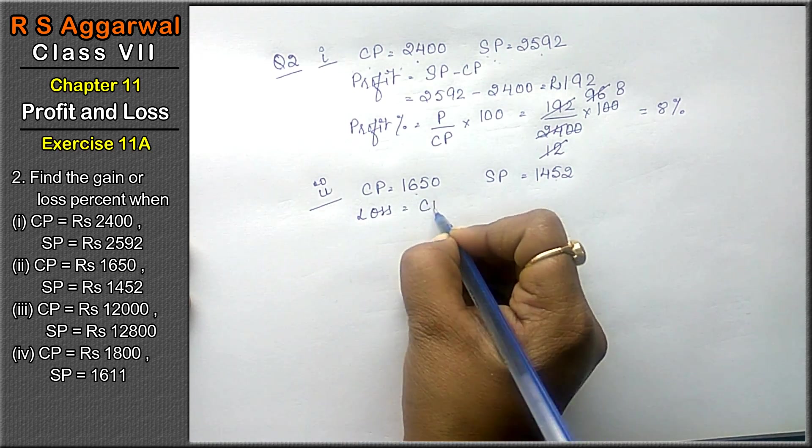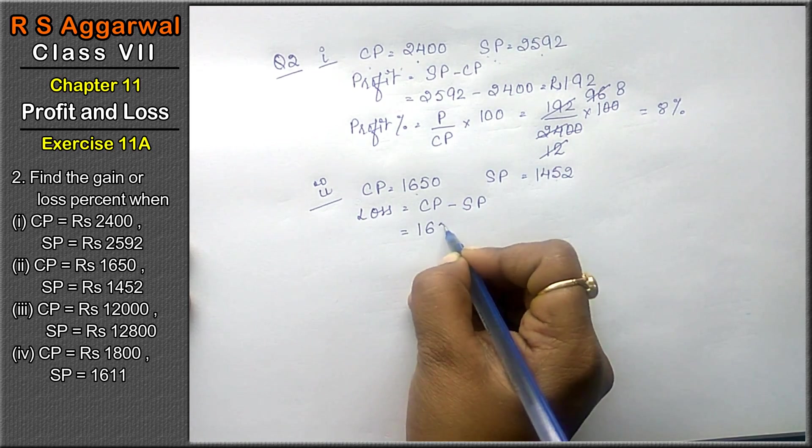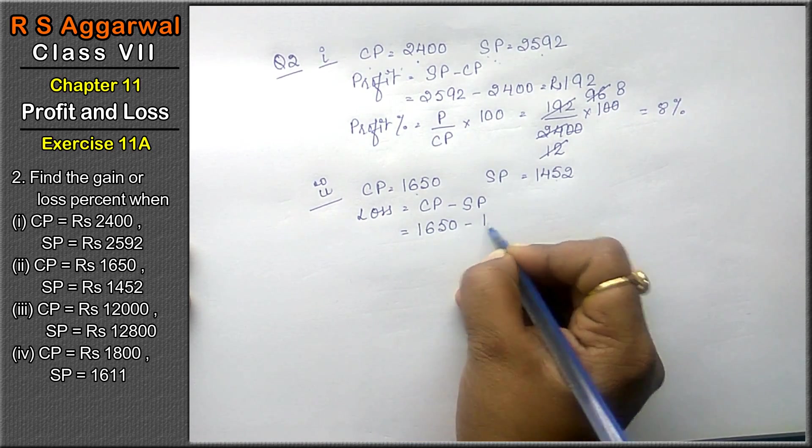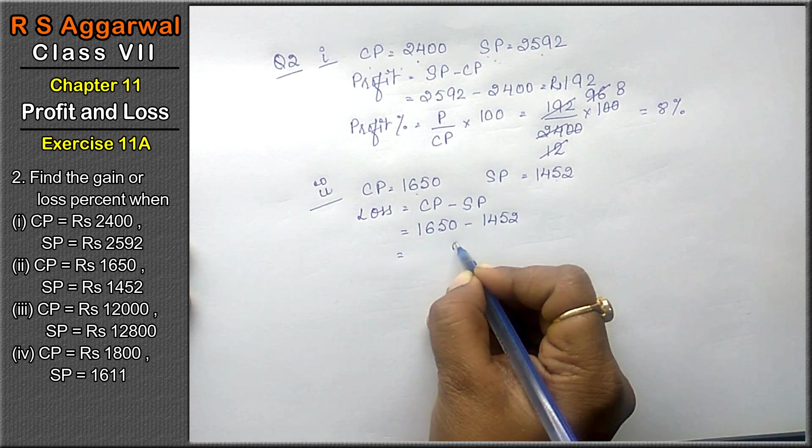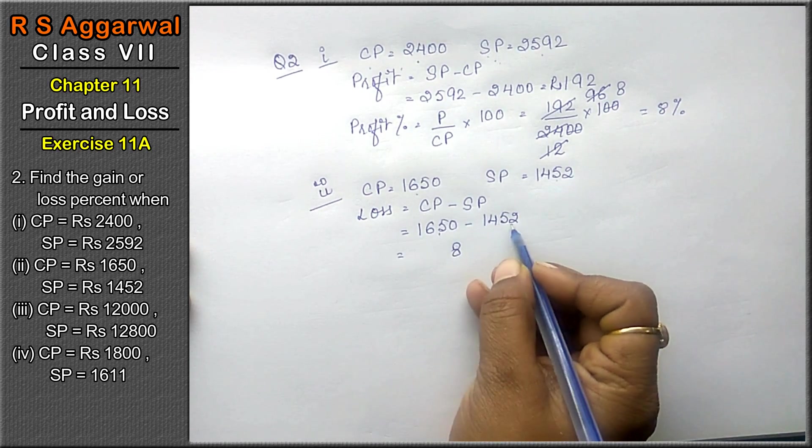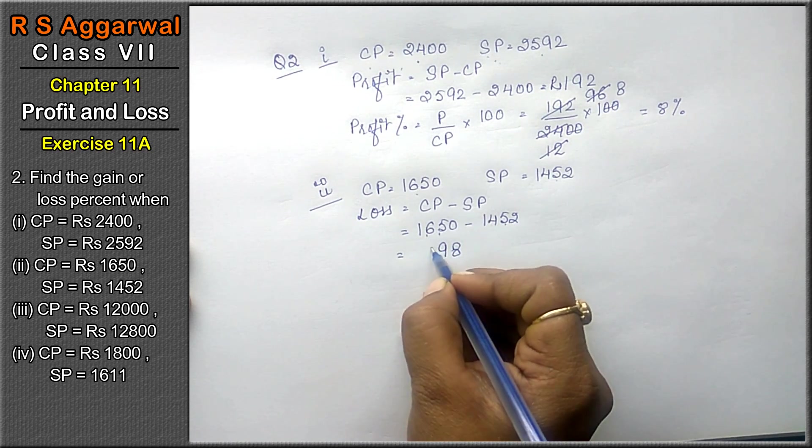Loss equals to, loss formula is CP minus SP. CP is 1650, SP is 1452. The calculation gives us 198.